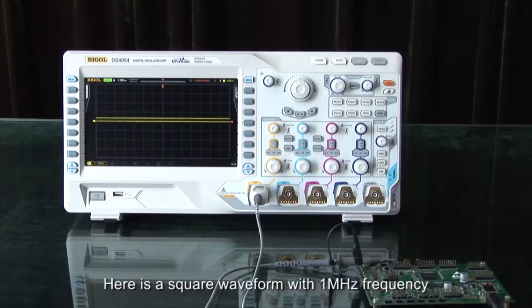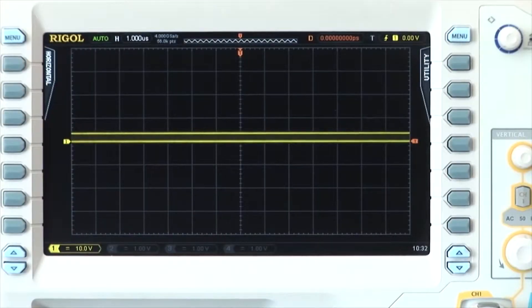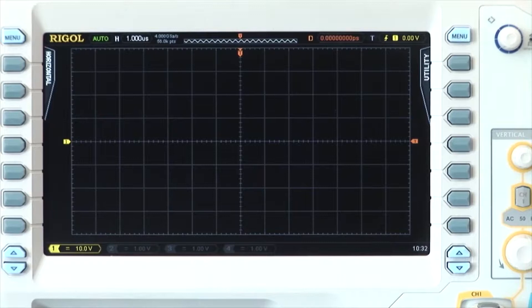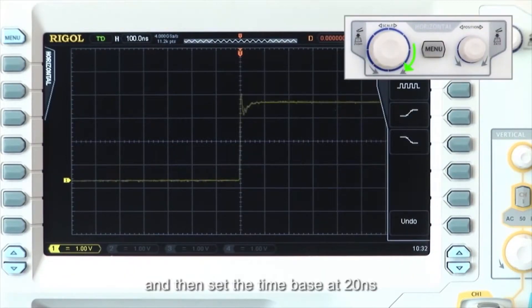Here is a square waveform with 1 MHz frequency, but there is a narrow pulse every 1000 periods. Let's connect this signal to channel 1. Press Auto and set the time base to 20 ns.